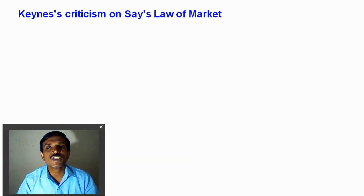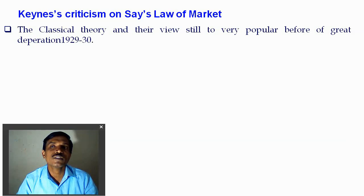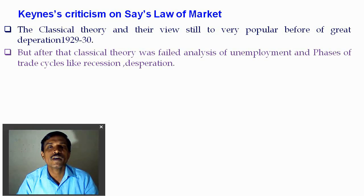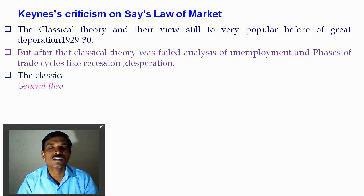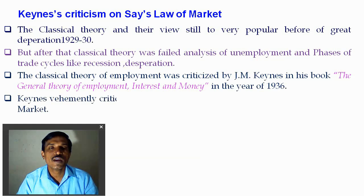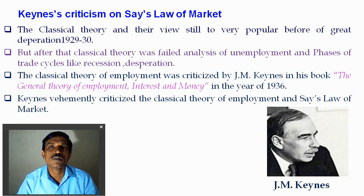In 1936, J.M. Keynes criticized Say's Law of Market. The classical theory was very popular until 1929 and 1930. But after the Great Depression, certain issues of unemployment and recession emerged, and the classical theory and J.B. Say's theory did not provide answers to these issues. That's why Keynes criticized the classical theory of employment and Say's Law of Market. After that, the classical theory failed in its analysis of employment and the trade cycle failures like recession and depression. Keynes explained his theory in 1936 — the General Theory of Employment, Interest and Money — and vehemently criticized Say's Law of Market and the classical theory.